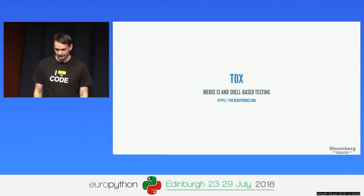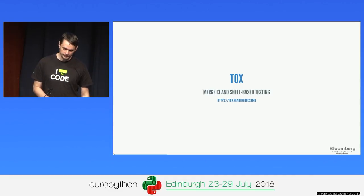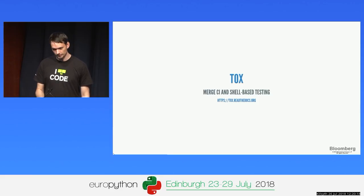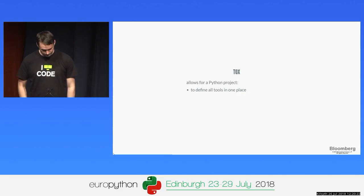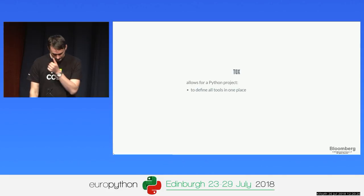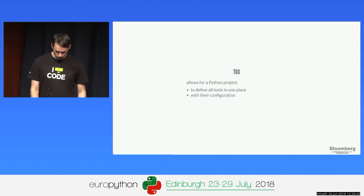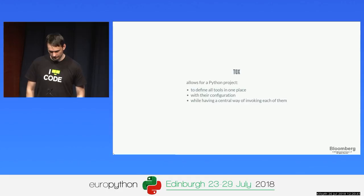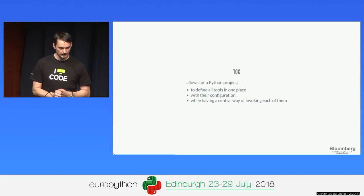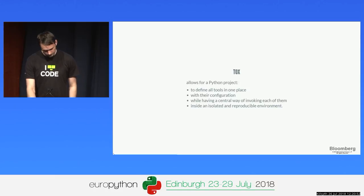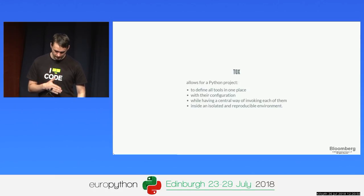How can we achieve merging CI and shell-based testing? The idea is that we should be able to run locally everything we run on CI. This is especially important because if anything breaks on CI, you want to be able to reproduce it locally and debug it. Tox allows a Python project to define all tools in one place with a single configuration file, giving you a central way of invoking them — think of it like make targets — while creating an isolated and reproducible environment.